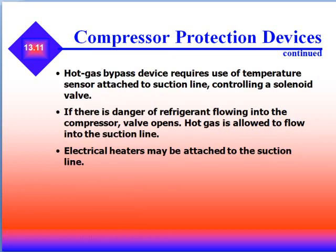Hot gas bypass devices require the use of a temperature sensor attached to the suction line controlling a solenoid valve. If there's a danger of refrigerant flowing into the compressor, the valve opens. Hot gas is allowed to flow into the suction line, heating the line and evaporating the refrigerant. Electrical heaters may also be attached to the suction line.